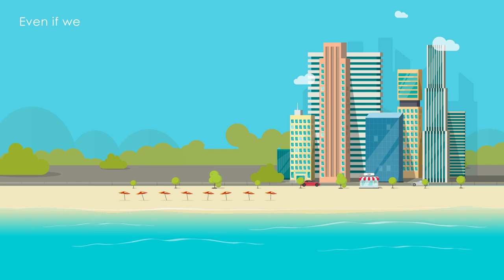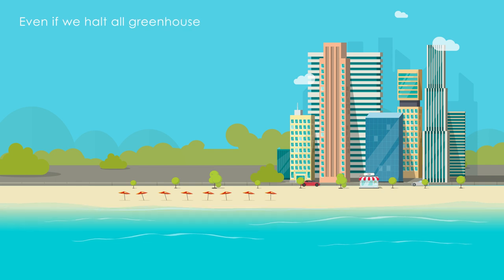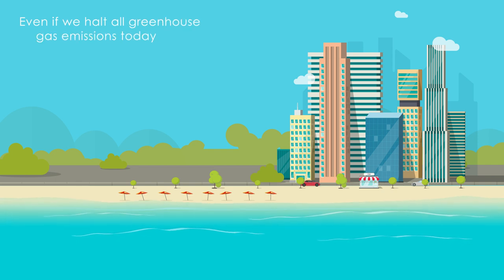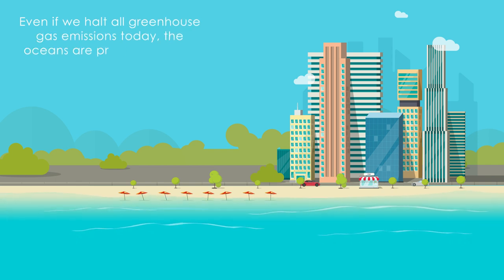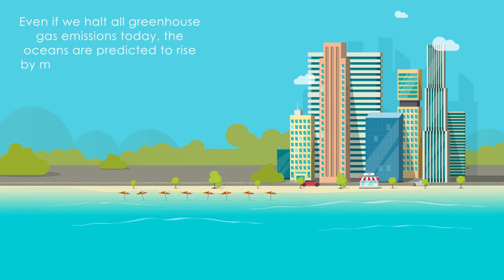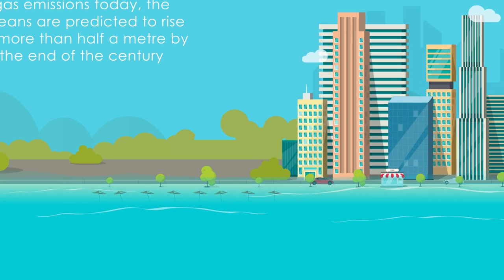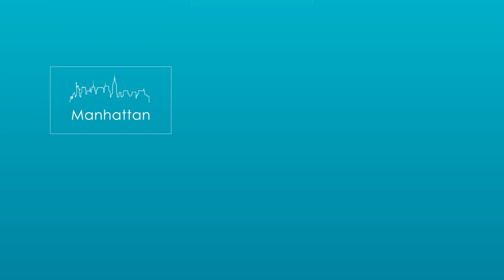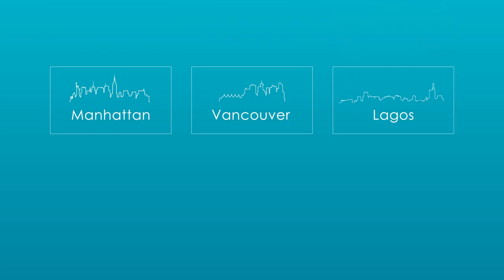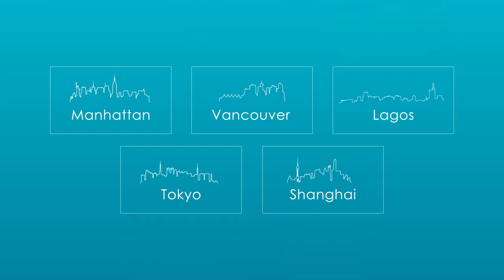Even if we halt all greenhouse gas emissions today, the oceans are predicted to rise by more than half a meter by the end of the century, threatening coastal cities including Manhattan, Vancouver, Lagos, Shanghai and Tokyo.